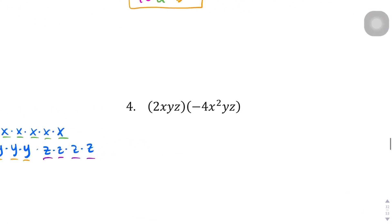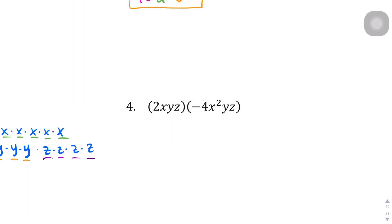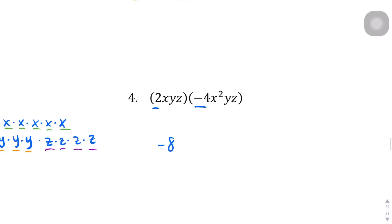Question number 4. Doing what we just learned, I'm just going to multiply the like terms. So 2 and negative 4 gives me negative 8. For the X's, it's 1 plus 2, which gives me x to the power of 3. Here is y to the 1st power and another y to the 2nd power, so 1 plus 1 is 2 — y to the 2nd power. And the same thing for the Z's. So we've got negative 8, x to the 3rd power, y to the 2nd power, z to the 2nd power.